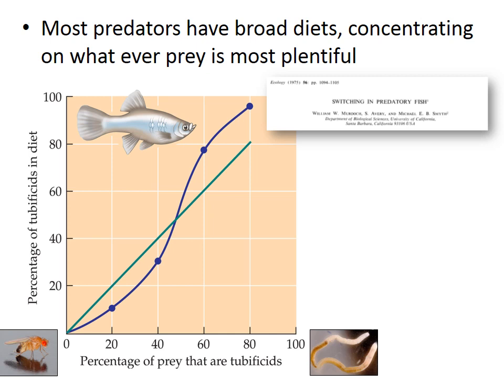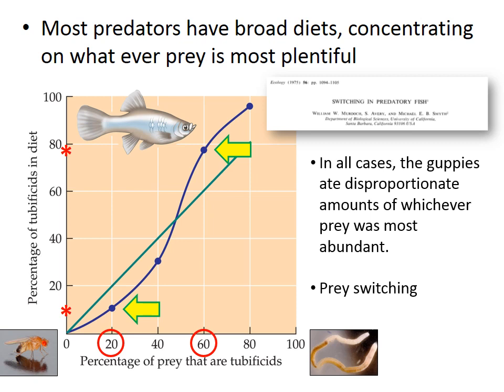The x-axis in this graph represents the percentage of prey that are tubificid worms. In the first trials, when the pool of prey was 20% worm and 80% fly, the guppies focused foraging on flies, and worms were only 10% of their diet — the fish consumed flies in a greater proportion than their abundance; flies were 90% of the diet but only 80% of the prey available. When the prey pool shifted to 60% worms and 40% flies, worms in the diet increased to almost 80%. In all cases, guppies ate disproportionate amounts of whichever prey was most abundant, switching focus as relative abundance changed.